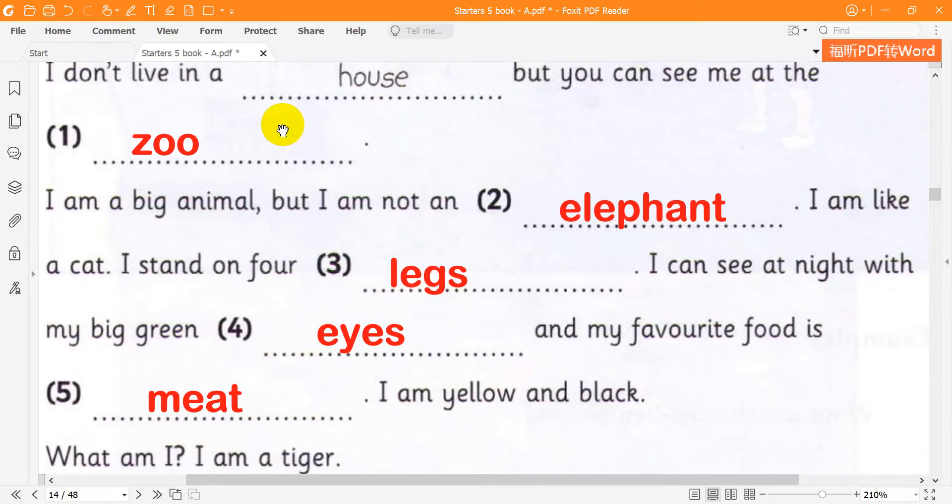A tiger. I don't live in a house, but you can see me at the zoo. I am a big animal, but I am not an elephant. I am like a cat. I stand on four legs. I can see at night with my big green eyes.